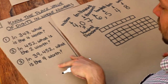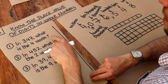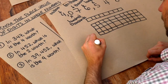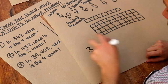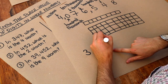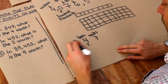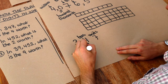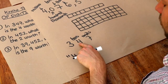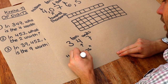Now let's use this to answer some questions. In 347, what is the four worth? Writing that out: 347 — the rightmost digit is the units digit, then this is the tens digit. So we could say this four is worth four tens, which is a perfectly acceptable answer. Or we could also say that four tens is 40, so we could write our answer as 40.